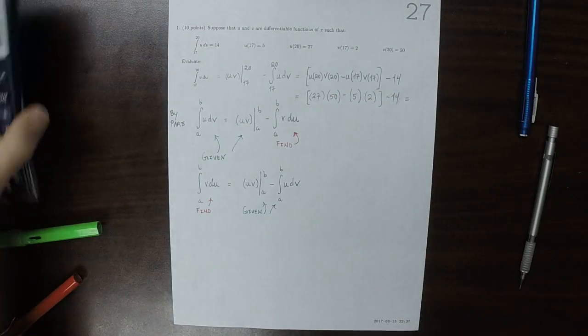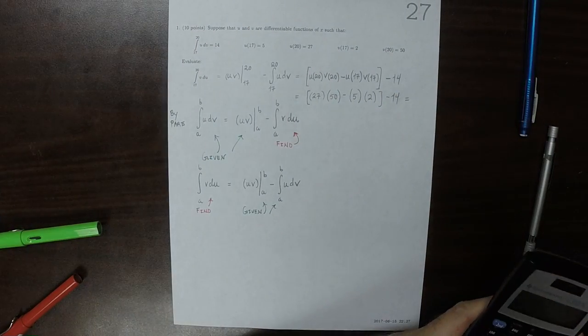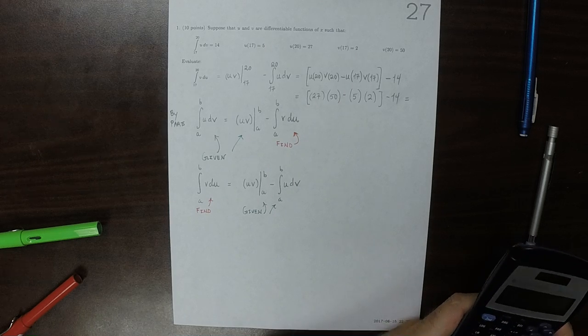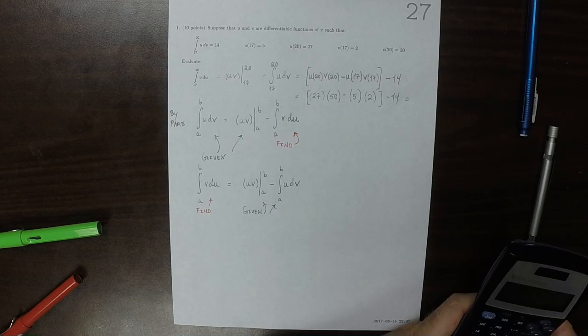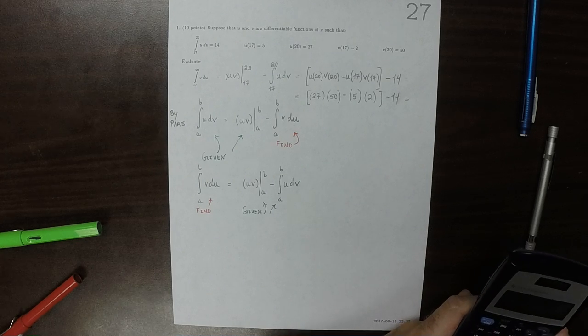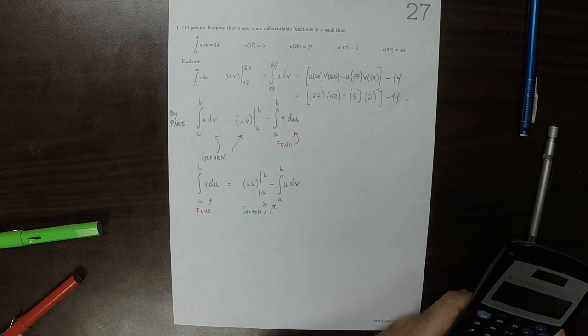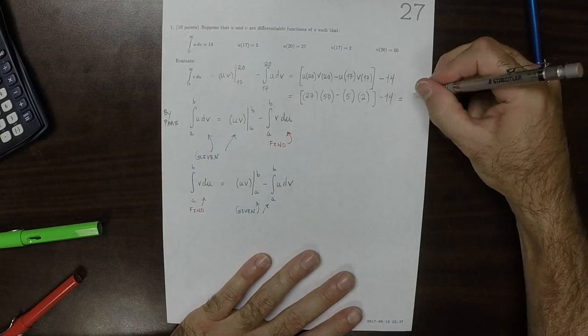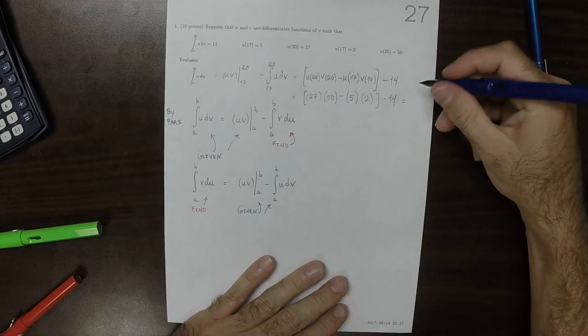Okay, plug all that into the calculator. 27 times 50, minus 5 times 2, minus 14. The answer is 1326.